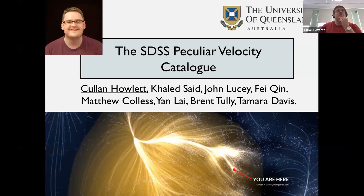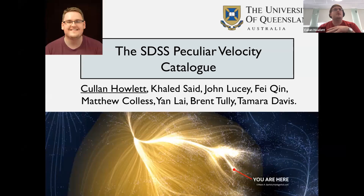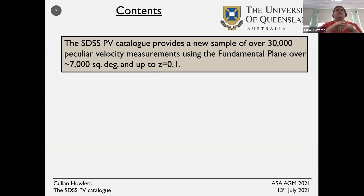Hi everyone, my name is Colin Hamlet. I'm a postdoc at the University of Queensland and today I'm going to be talking about some work we've been doing on the Sloan Digital Sky Survey Peculiar Velocity catalogue. The key takeaway is that we're producing a new catalogue of peculiar velocities, which is a sample of over 30,000 measurements using the fundamental plane.